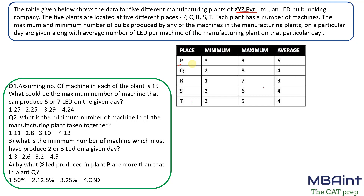The first question assumes the number of machines in each plant is 15. What could be the maximum number of machines that can produce 6 or 7 LEDs? So we have to maximize the machines producing 6 or 7 LEDs on a given day, looking at each of the manufacturing plants P, Q, R, S, T.